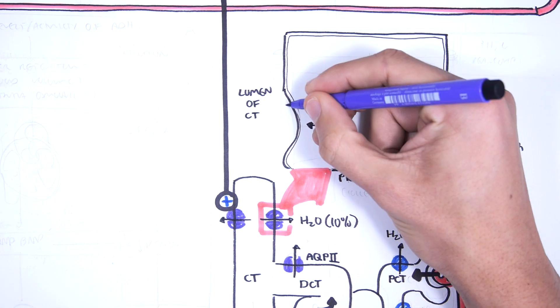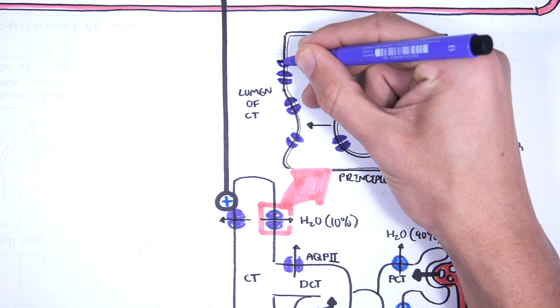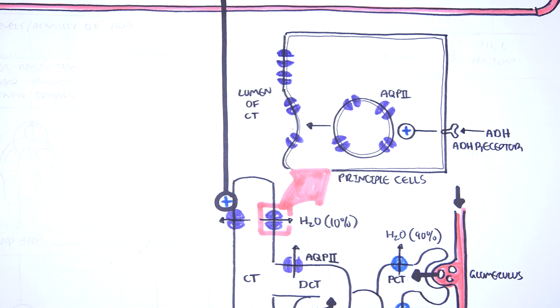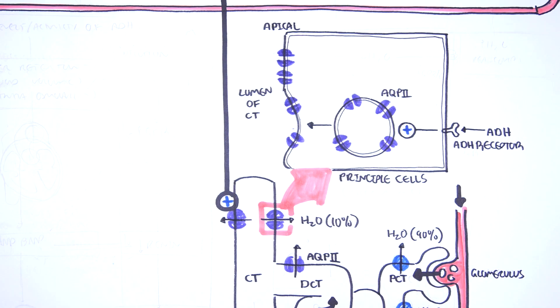This will stimulate then the expression of aquaporin type 2 channels on the apical surface of the principal cells. These channels will increase the reabsorption of water from the nephron tubule.